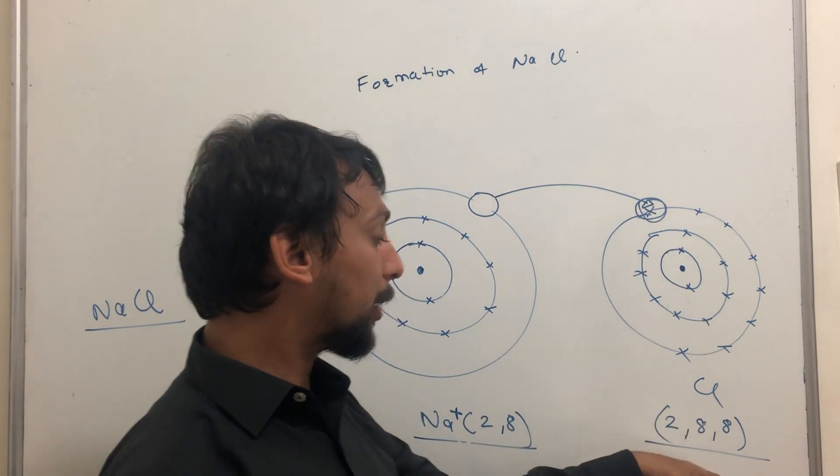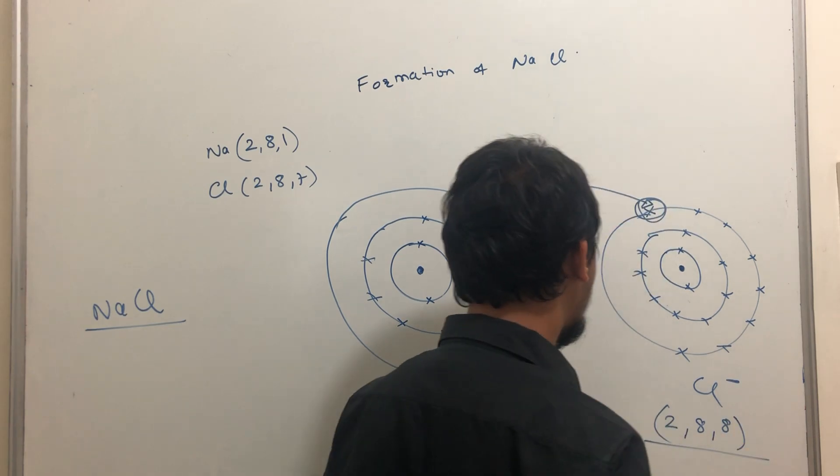Because sodium gave to chlorine and chlorine accepted from sodium. If sodium didn't give, chlorine's orbit wouldn't be complete. If chlorine didn't accept, sodium would also not become stable. So both helped each other in becoming stable, and that's why they create a bond. That is an electrovalent bond. Now see, this electron jumped from here to here.